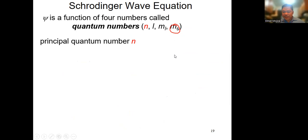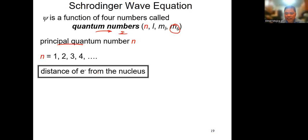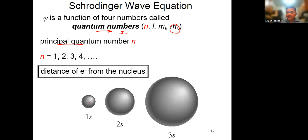We start with the principal quantum number. Each quantum number has a reference starting with the letter S. The principal quantum number is a positive integer and it tells you the distance of the energy from the nucleus — the size. So 1s, 2s, 3s — the higher the n, the higher the size, and it is always a positive integer.